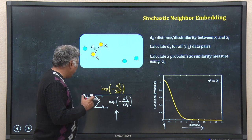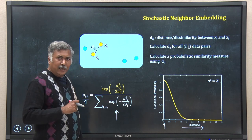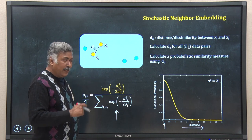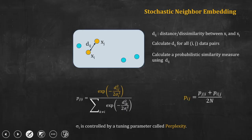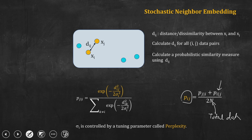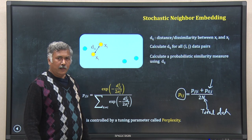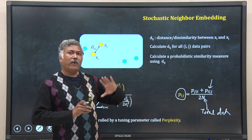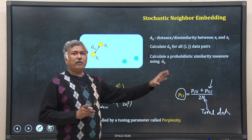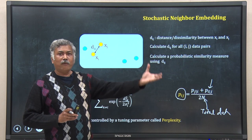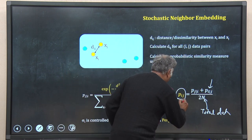We are calculating p_j given i for x_i and x_j. Similarly, I can calculate p_i given j using the same formula. Then I sum them together and divide by 2n, where n is the total number of data points, and I get a joint probability p_ij. In my further calculations I will use p_ij rather than the raw distance d_ij.